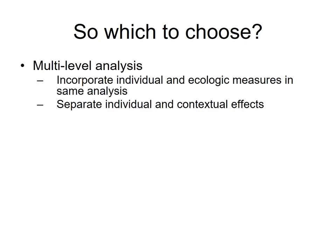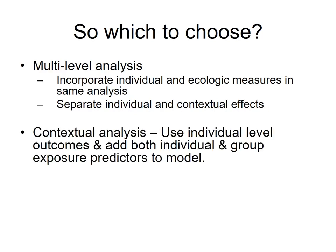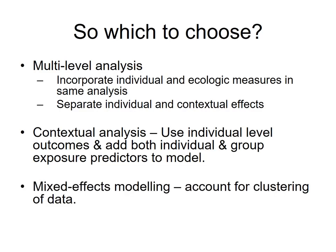To solve the discrepancy between ecological and individual data, there are three options. First, conduct a multi-level analysis that incorporates both individual and ecological measures in the same analysis to separate individual and contextual effects. Second, use contextual analysis — use individual-level outcomes and add both individual and group exposure predictors to the model. Third, conduct mixed-effect modeling, accounting for clustering of the data by clustering individual data based on certain groups.